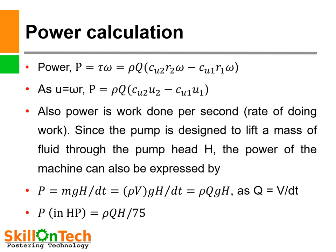Power is work done per second. Since the pump is designed to lift a mass of fluid through the pump at head H, the power of the machine can also be expressed by power equals mgh upon dt. So this can be written as mass equals ρV, giving ρV·gh upon dt equals ρQgh. As we know flow equals V upon dt. Or power equals ρQHm upon 75. If ρ is density, Q is in cubic meters per second, and manometric head Hm is in meters, then power can be calculated in horsepower.